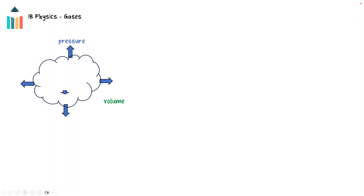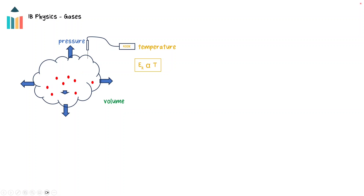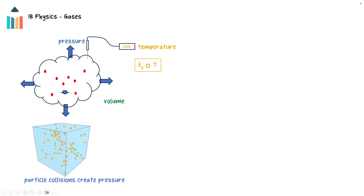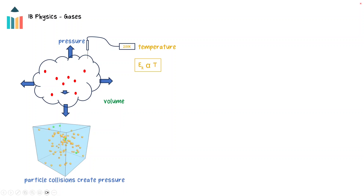The volume, pressure, and temperature of a gas are bulk properties of a gas at a macroscopic scale. At a microscopic scale, a gas is made up of a collection of particles, each one in random motion. This motion is related to the temperature of the gas. Temperature is directly proportional to the average kinetic energy of the particles of the gas. The gas particles collide with each other and with the walls of the container, and the free motion of the particles causes a gas to expand to fill the volume of the container it is in.